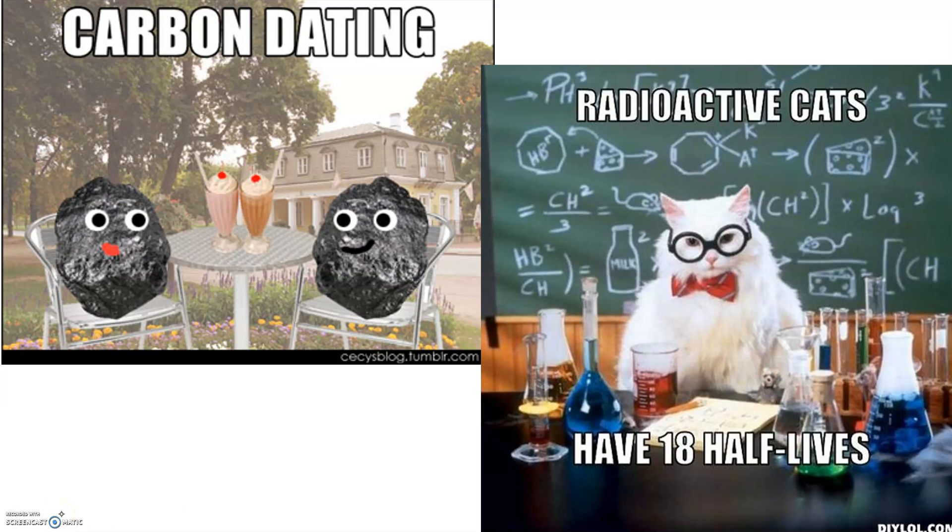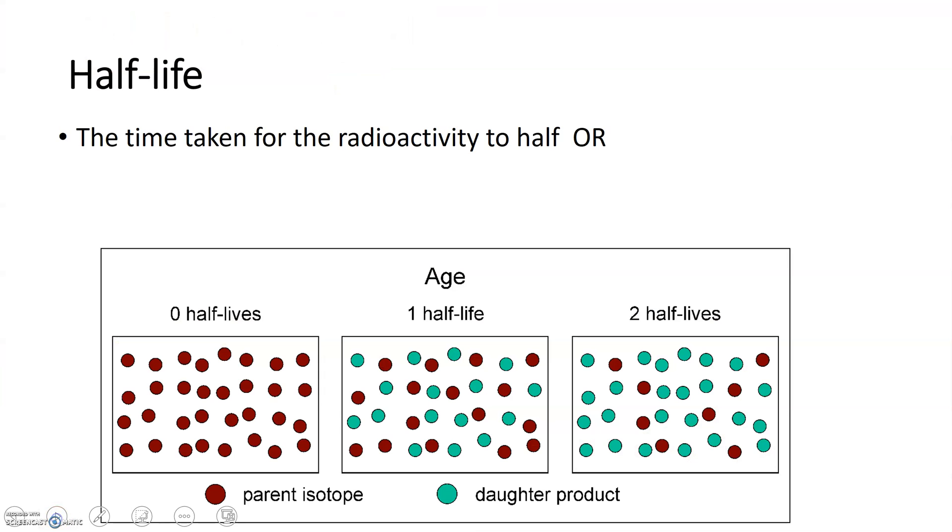Now let's get some amusing memes out of the way first of all. Carbon dating, hilarious. And radio cats have 18 half-lives. Well the key idea here is that these two, the way carbon dating works which is how we date old materials, it might be skeletons, we can use the idea of half-lives to work out how old whatever it is. So let's see what half-life is all about. Now the definition of half-life, well there's two you can opt for. One is the time taken for the radioactivity to half.